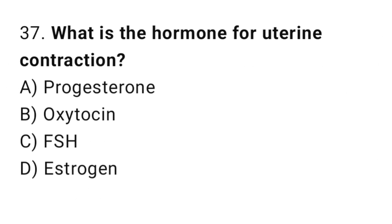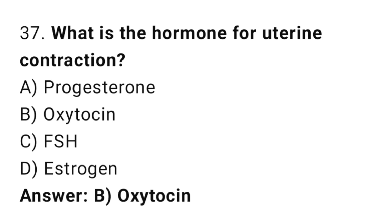Question 37: What is the hormone for uterine contraction? The right answer is B, oxytocin. Oxytocin stimulates uterine muscles.